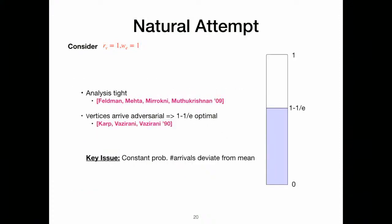Even when vertices arrive adversarially — meaning an adversary designs the worst-case sequence — you can still get 1 - 1/e, and in fact it's optimal. This is the celebrated result of Karp, Vazirani, and Vazirani. So we're not improving even on this simpler problem, which is why the natural attempt doesn't work. The key issue is that there's a constant probability of deviation from the mean: the mean arrival is one, but with constant probability some vertex never arrives. Our algorithm will try to fix this.